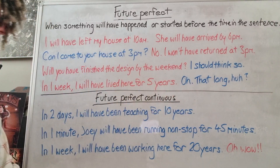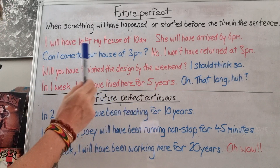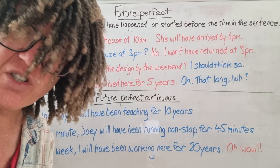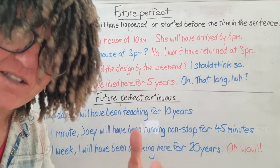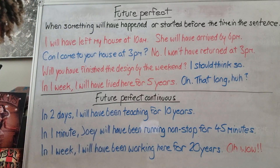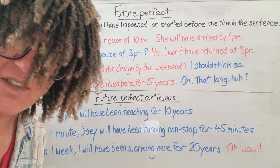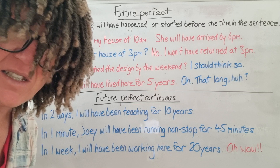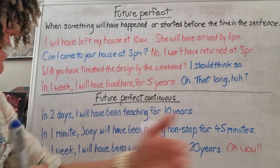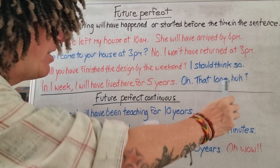In one week, I will have lived here for five years. We also use future perfect to say how long something has been happening which is still in progress. For example, I live here and I moved here on — it's the 19th of July today so let's say the 26th of July. I moved on the 26th of July, so in one week from now I will have lived here for five years — that's the five year anniversary.